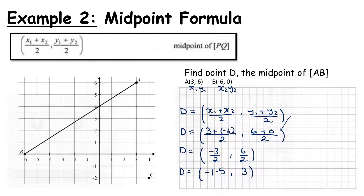Going to the graph, that puts point D at approximately (-1.5, 3), which we label. You can see it's exactly halfway between A and B. I'd suggest always using the formula rather than eyeballing the graph, because the midpoint can fall at a non-obvious position like -1.5. The formula is straightforward and ensures you get full marks for your working — if you just estimate from the graph and get it wrong, that's a problem.